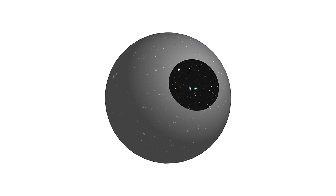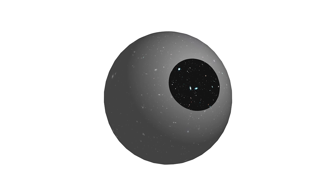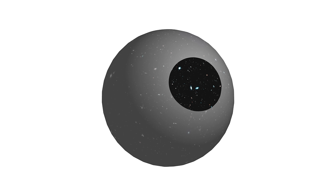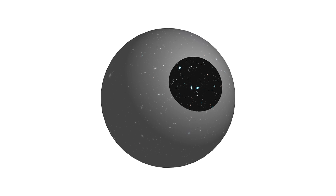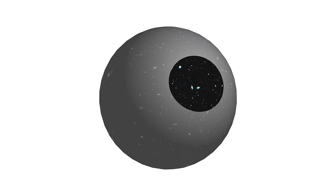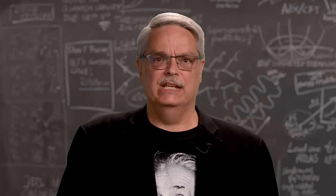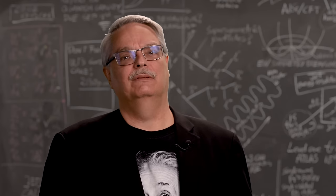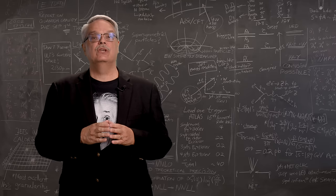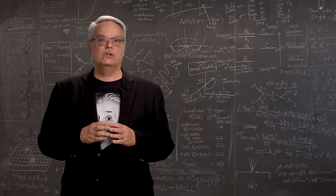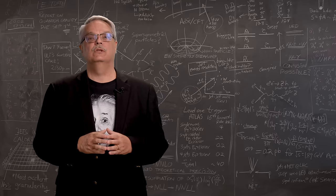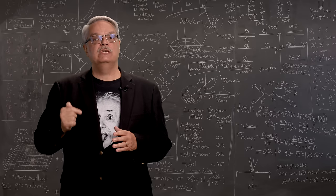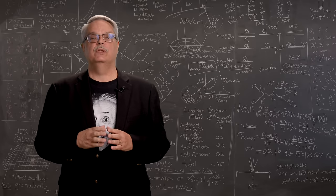But what if space is closed and shaped like a sphere, but so big that it looks flat, like the Earth can look flat? Well, in that case, space is not infinite. It has a finite size. So now we're getting somewhere. If the universe is closed, how big is it? Well, if you do a careful analysis using the maximum possible curvature allowed by the best measurements, you find that the universe can be no smaller than 250 times bigger than the visible universe.